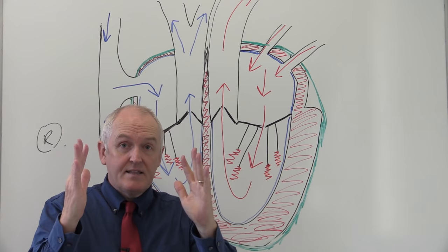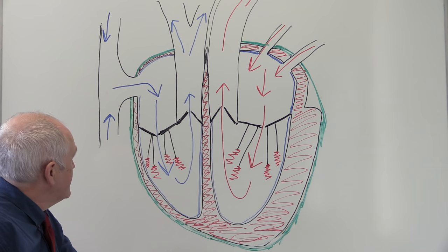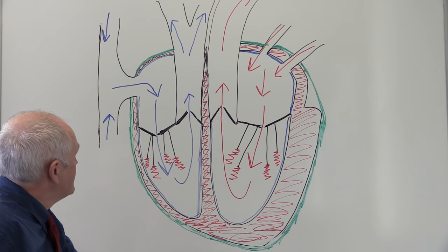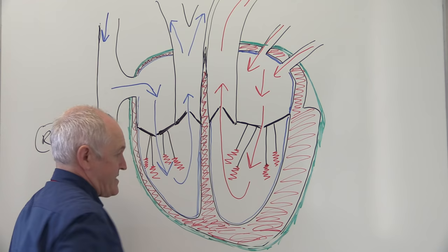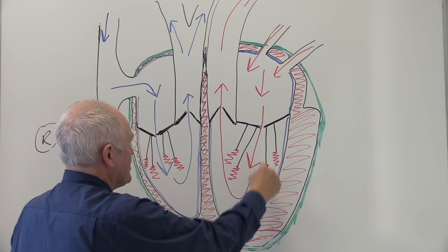At the end of contraction, if blood tries to get back down, that flow of blood shuts the pulmonary arterial semilunar valve. So we have a one-way flow of blood: from the veins to the atria, to the ventricles, out into the arteries. That's what valves do - they ensure one-way flow. Both atria contract at the same time and both ventricles contract at the same time.